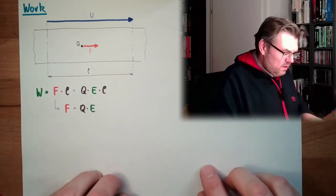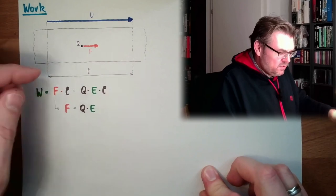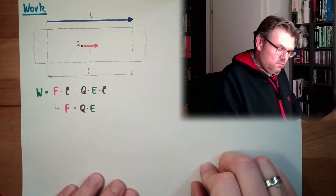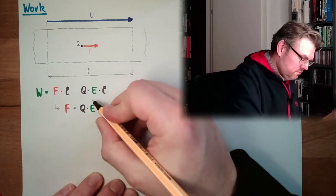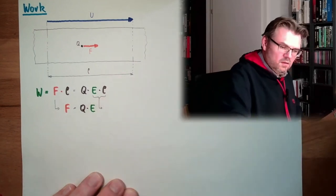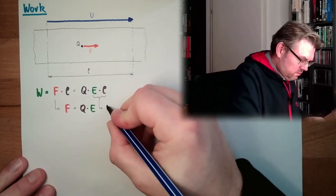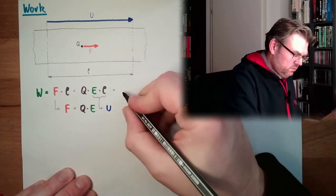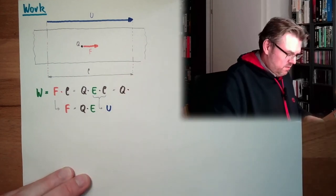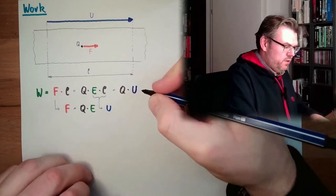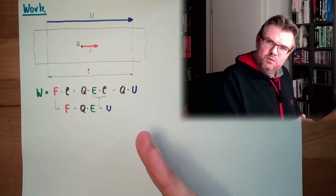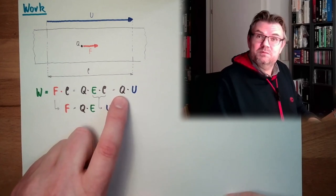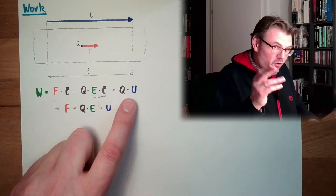And now electrical field multiplied by the length, so if we have here the electrical field multiplied by the length, we have the voltage U. So actually what is written here: work is q multiplied by U. This should not be a big surprise because we said U is the potential, the potential work per coulomb, and if I multiply this by coulomb we have the work.